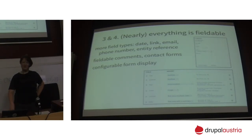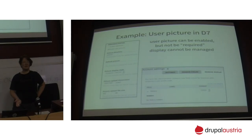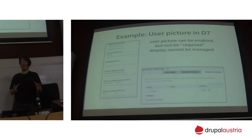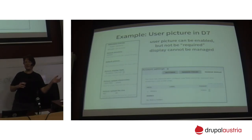Why is that relevant? I'll give you one example: the user picture. In Drupal 7, you could add a user picture to a user account, but you couldn't set it as required, and when you wanted to move it around on the account page, you couldn't because it's not a field. Now it's simply a field that is predefined. If you want to move it above or below the name, you can do that like any other field. Once you've understood how to work with fields, it doesn't matter whether you look at a user account, a taxonomy term, or a node — it all works the same.